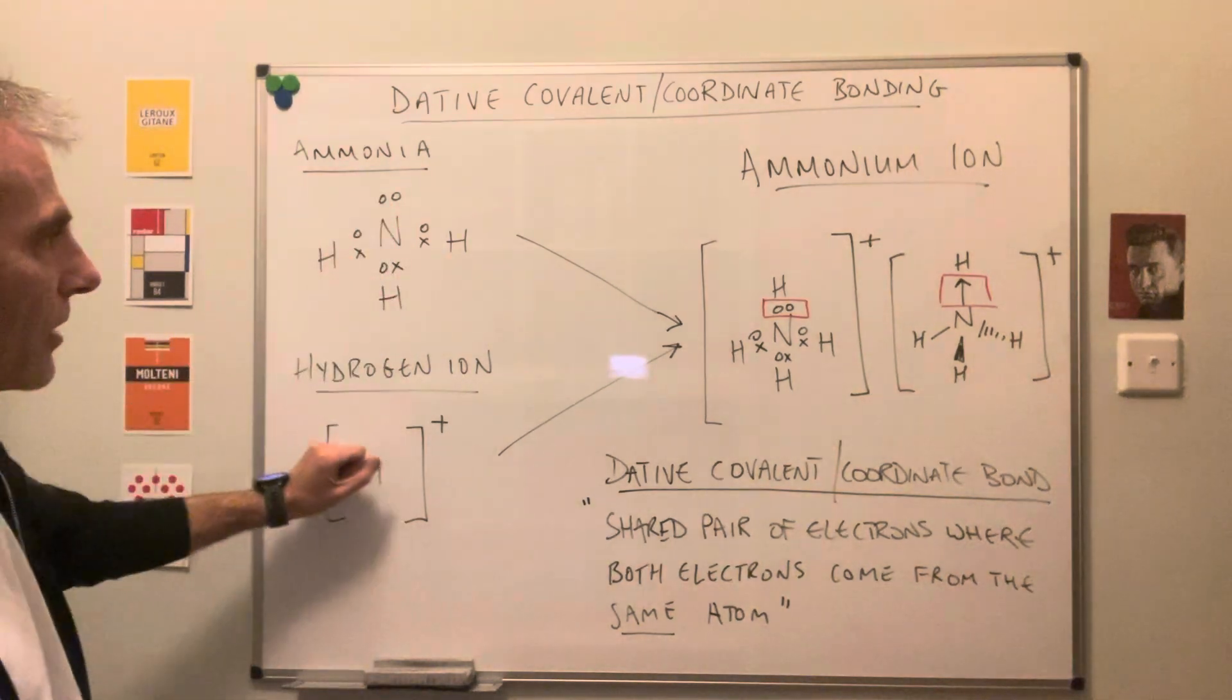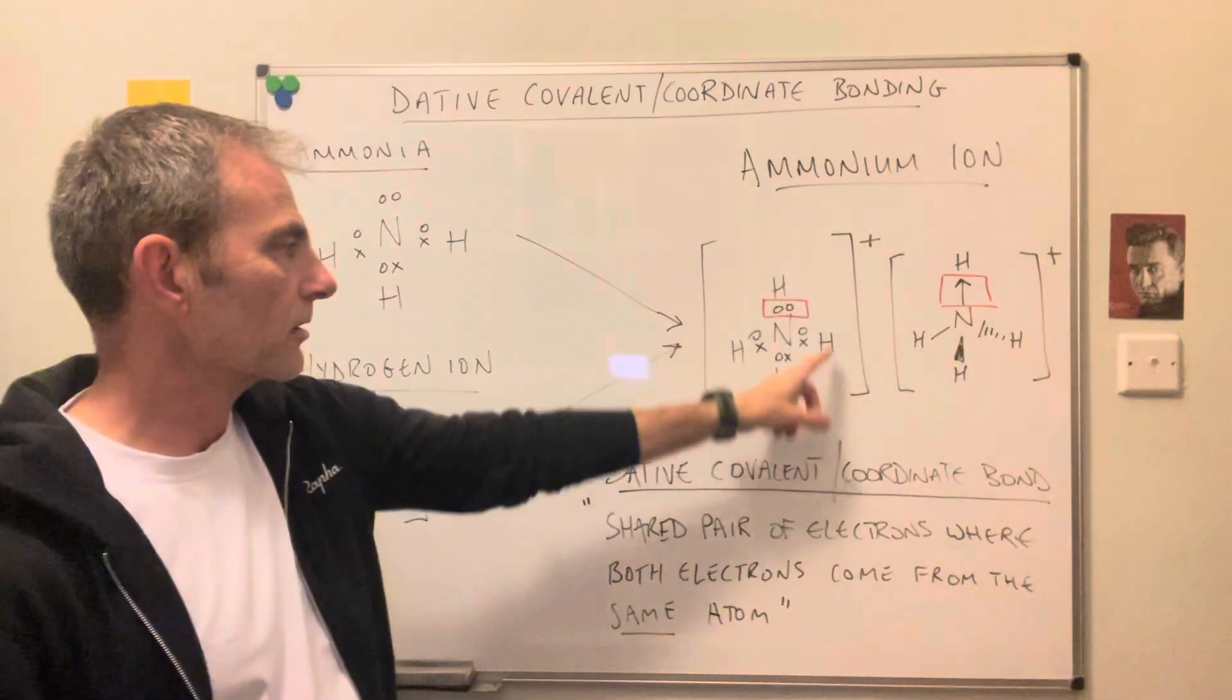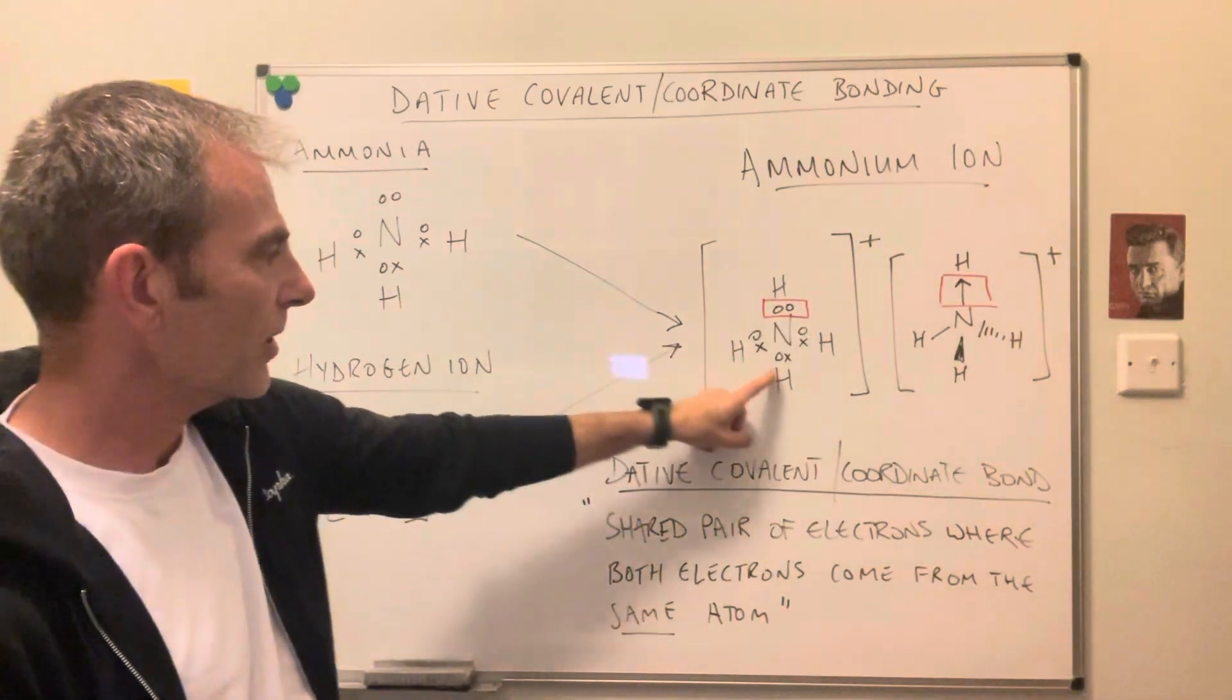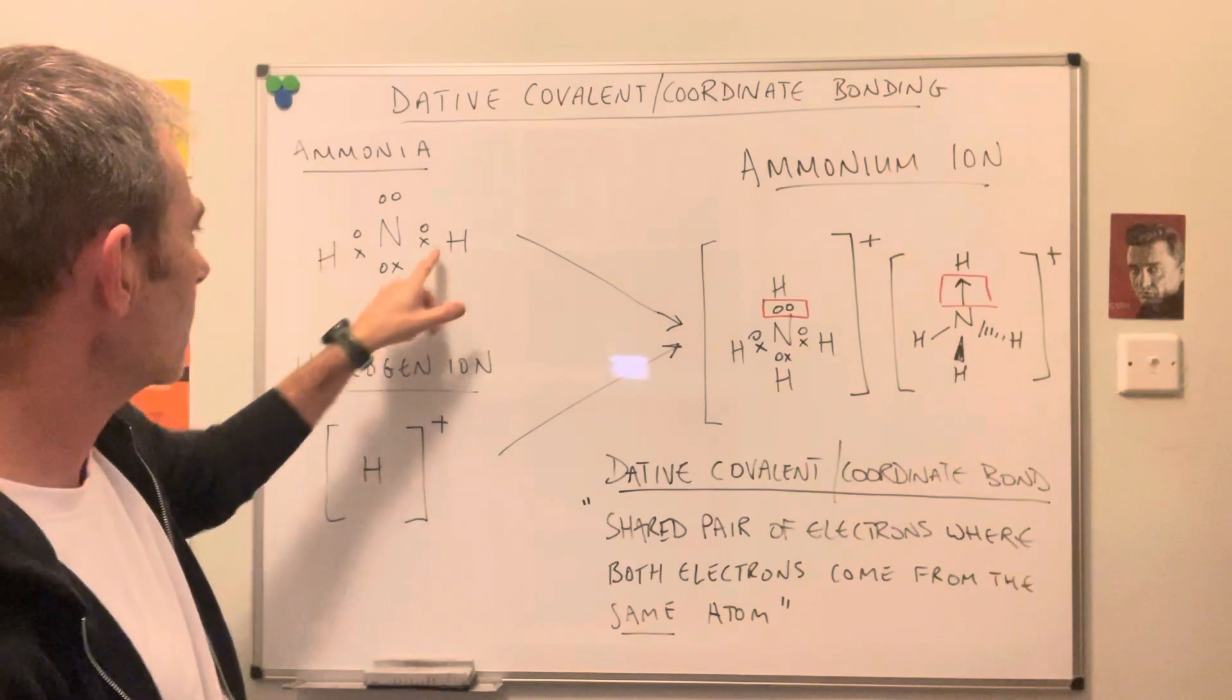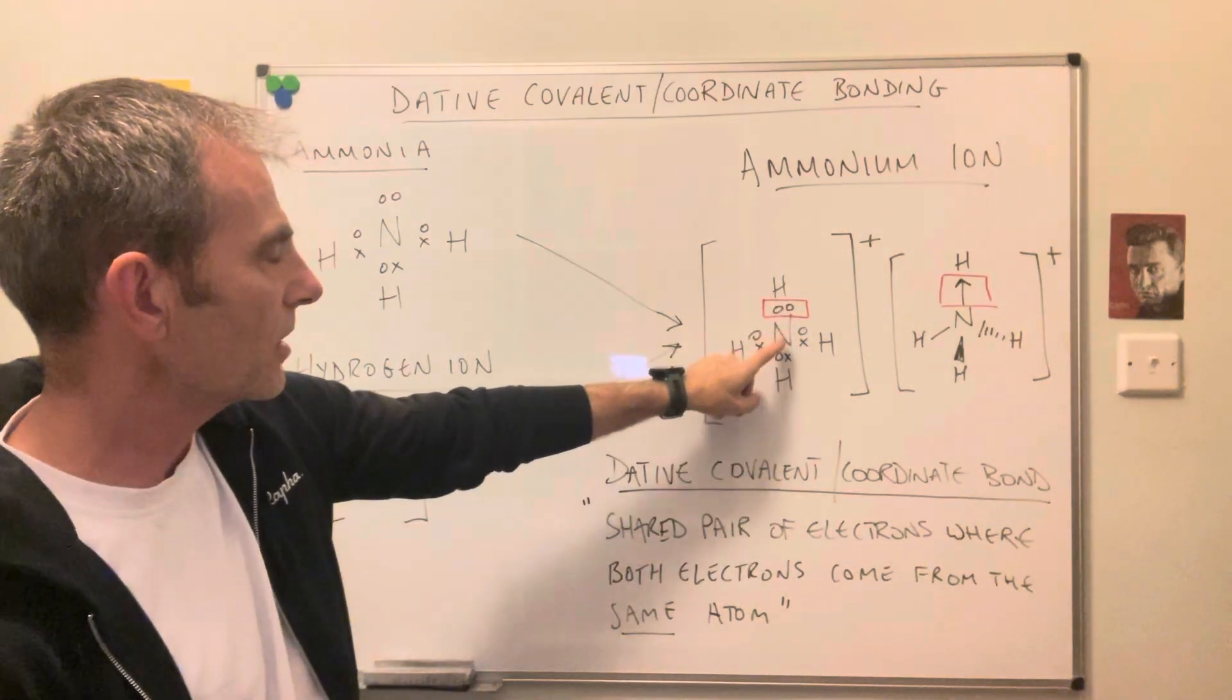To form the ammonium ion, I've got the dot and cross diagram there. So this part here is exactly the same as we had in ammonia, but this shared pair of electrons here between the nitrogen and this hydrogen.